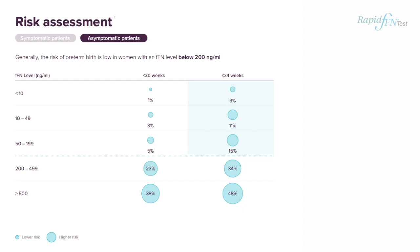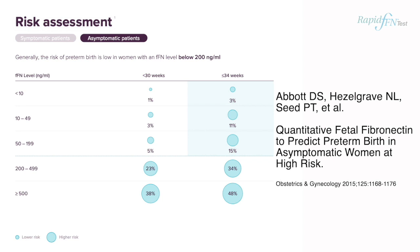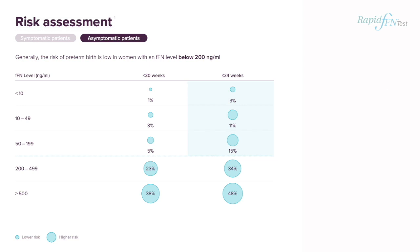Again, you can see that as the quantitative fetal fibronectin result increases within this asymptomatic patient group, so does the risk of delivery. The following study shows that nearly 70% of asymptomatic high-risk women between 23 and 28 weeks of pregnancy will have a quantitative fetal fibronectin of less than 10 nanograms per milliliter. We know that having a quantitative fetal fibronectin less than 10 nanograms per milliliter means that their risk of a preterm birth is no greater than a general UK obstetric population, which is 3.3%, so they can likely be managed per normal antenatal care.